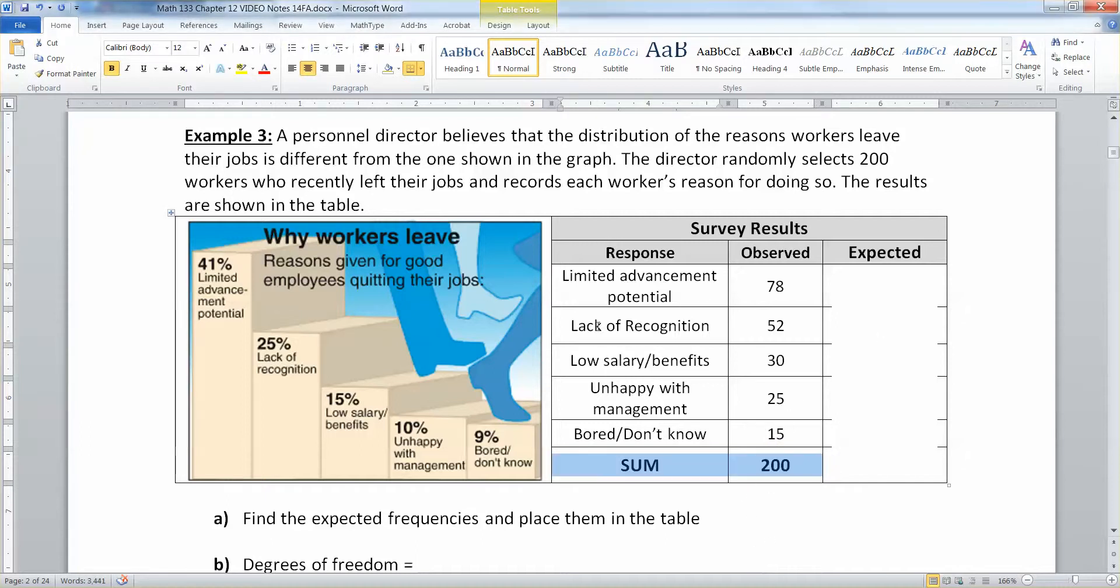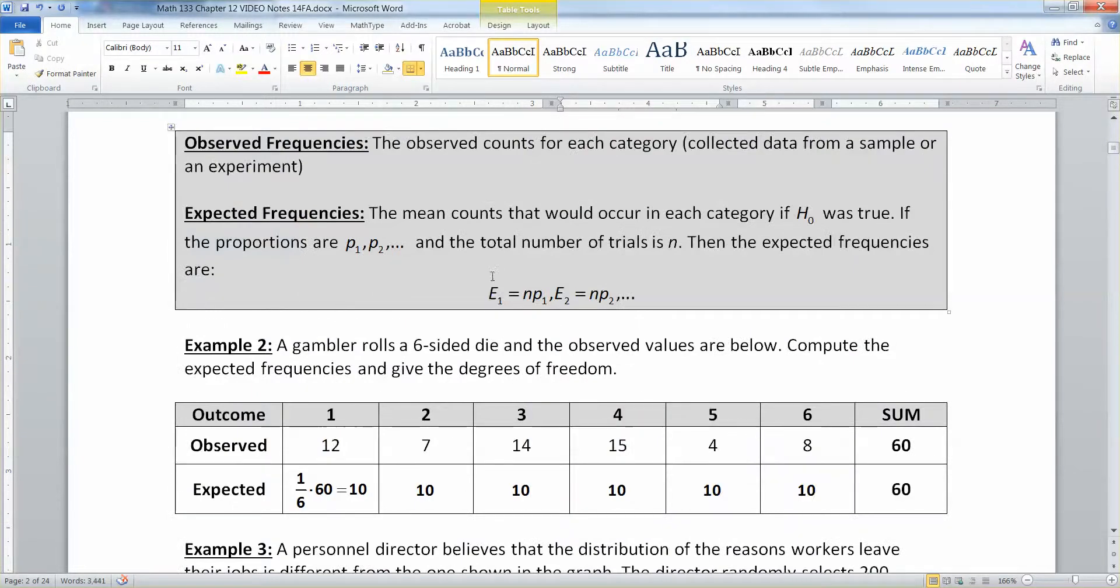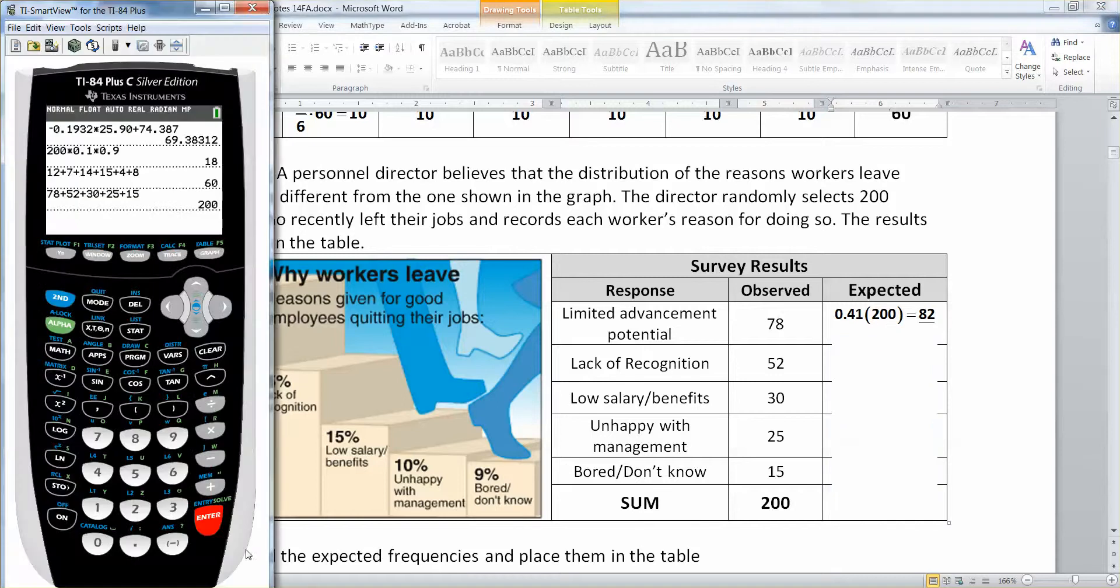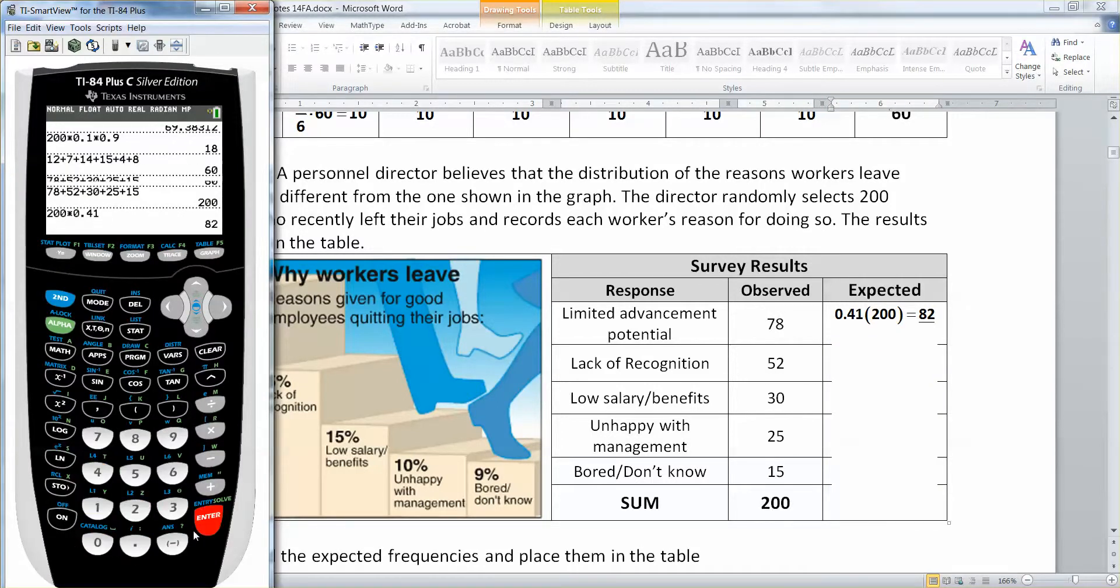So now what I want to do is I want to figure out the expected value for each of the categories. But I'm not going to assume that they're all equal, not the way a die was assumed to be all equal. So what I want to do is say, look, out of 200 workers, if indeed 41% leave because of limited advancement potential, then what I should do is take 41% times 200. That's the formula that says right up here. Your expected value is your N times your P value, which should look a little bit familiar because you saw that back in the binomial distribution chapter in chapter six. So you're going to say 200, which is your N, times your proportion for group one, which is the 41%. So you take 200 times 41% and you get 82.